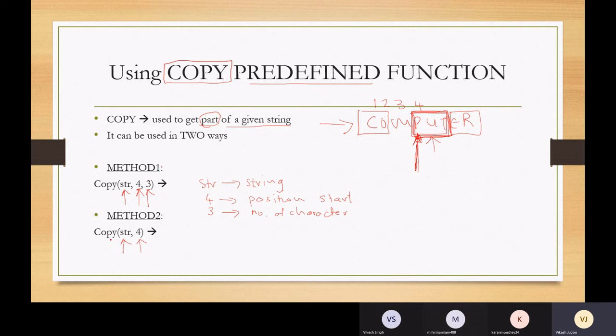Now in method two, we've got two parameters. Copy from your string, and it's got only one parameter, which is the start. So STR is still your string that you are copying from. And the four is your start, where I'm starting to copy from.